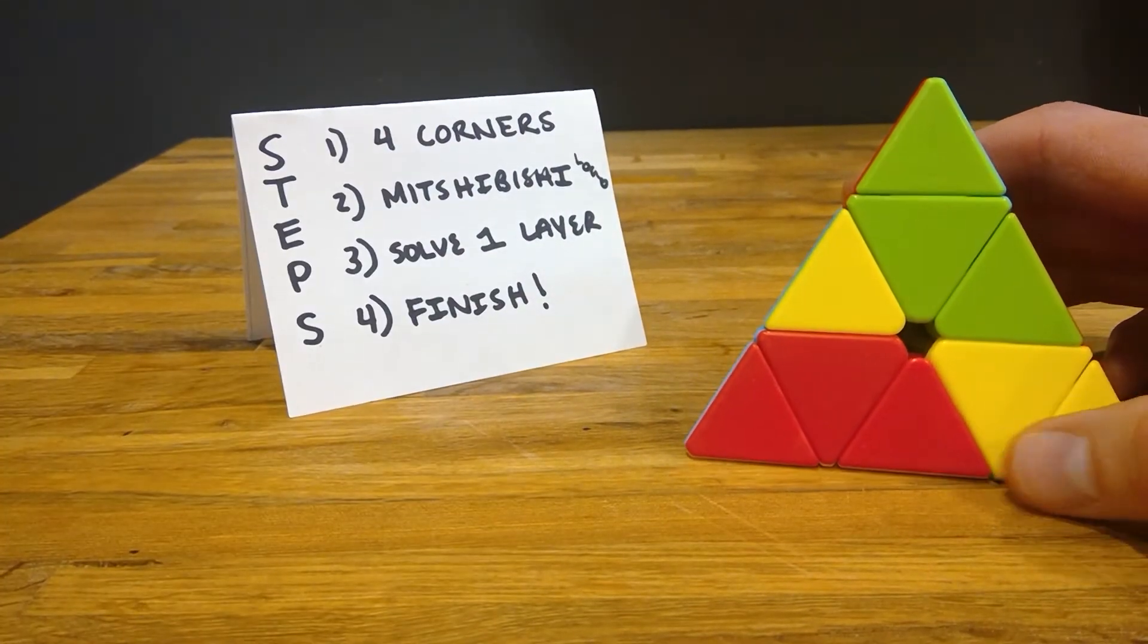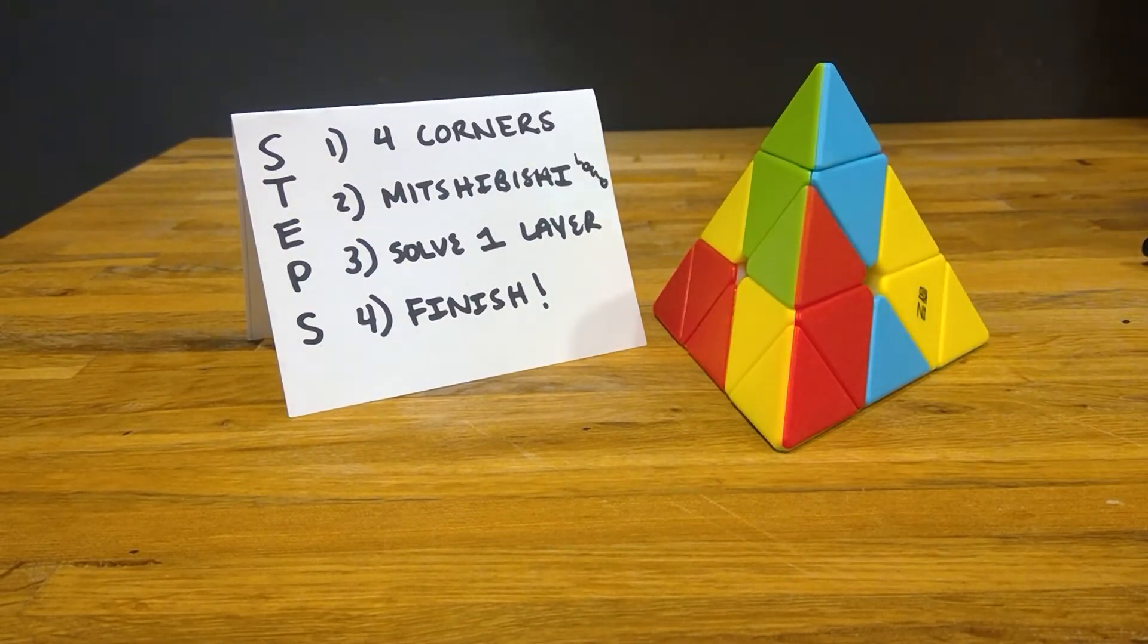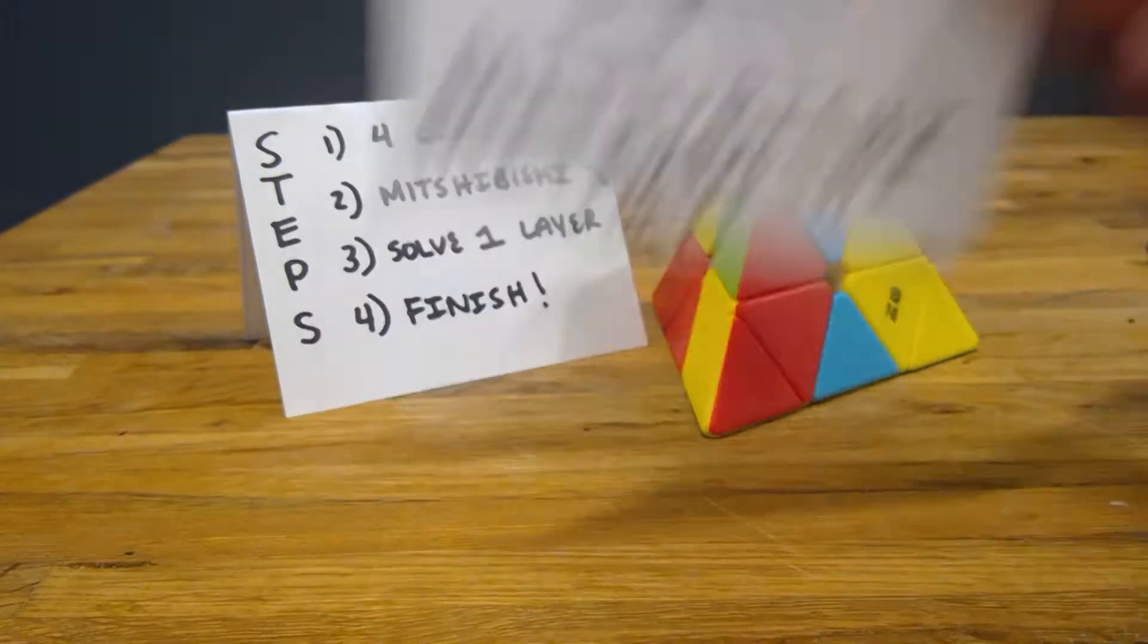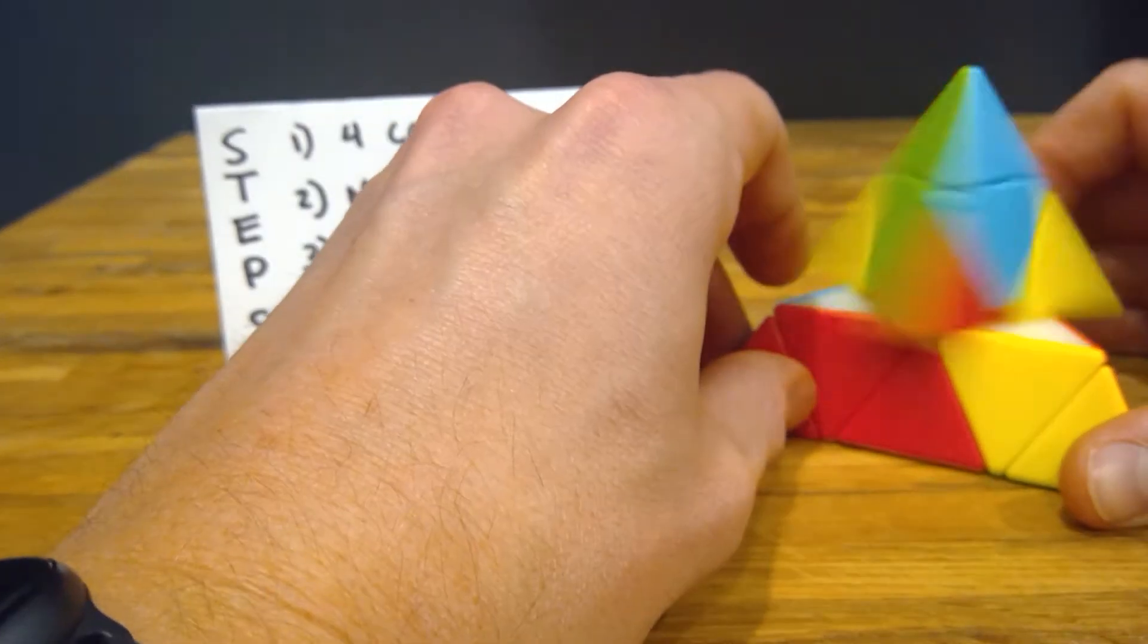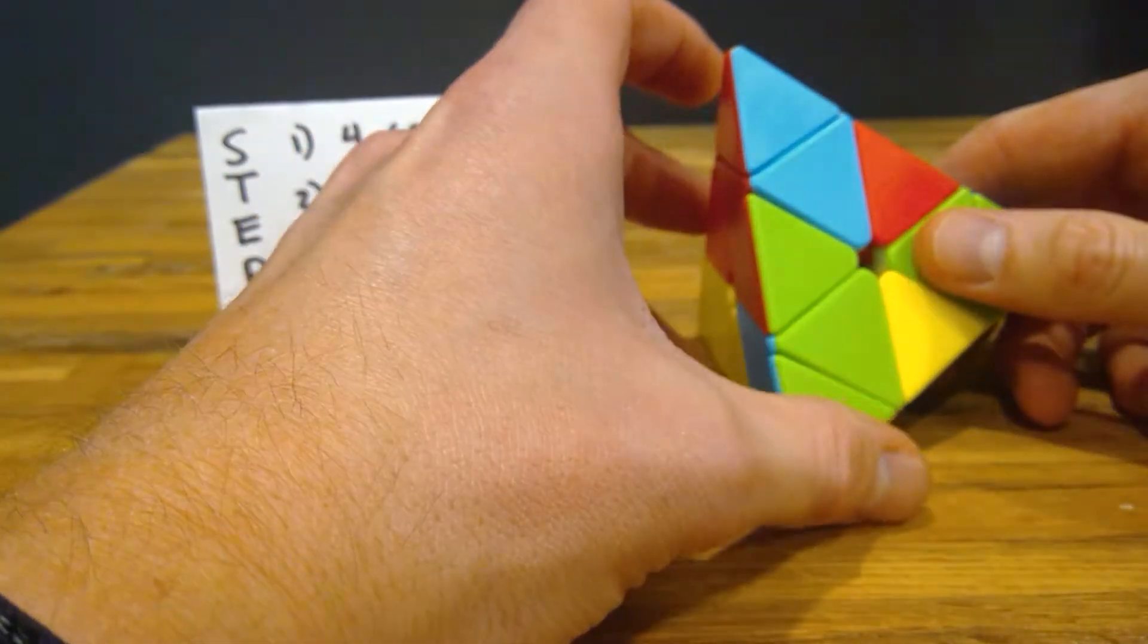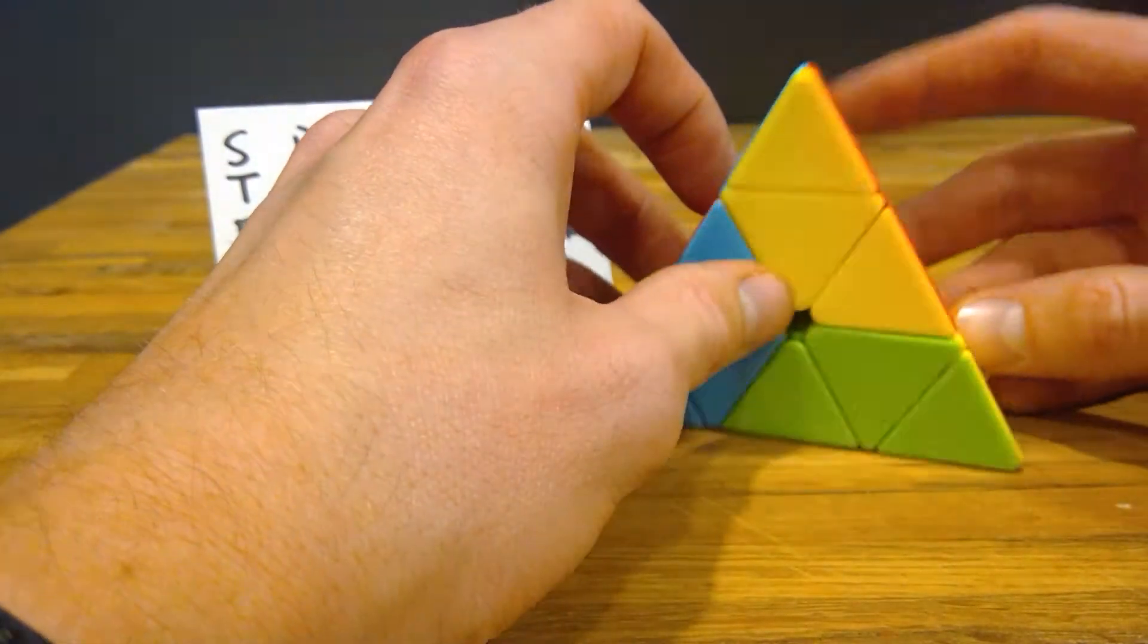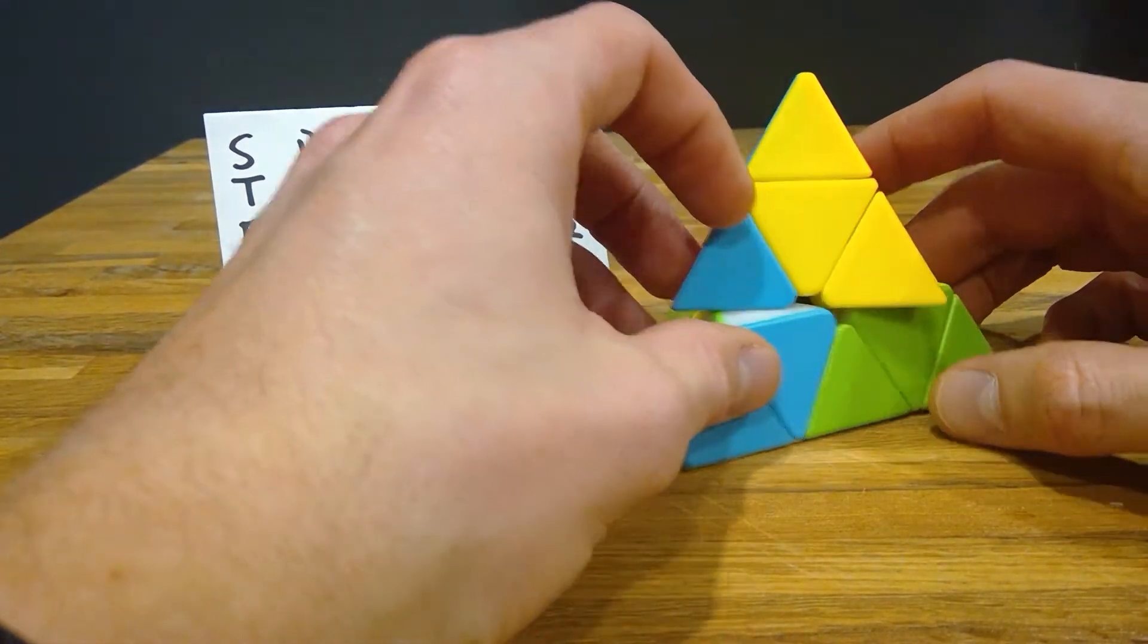The next step is solve for the Mitsubishi logo. If you don't know what the Mitsubishi logo looks like, it looks like this. It's a really bad drawing. Also, I don't know how to spell Mitsubishi. I mean, I know how to spell logo, but I don't know how to spell Mitsubishi. So, cut me some slack on that in the comments. Maybe I'll make it my New Year's resolution to learn how to spell Mitsubishi. But, anyways, let's try to solve for the Mitsubishi logo.